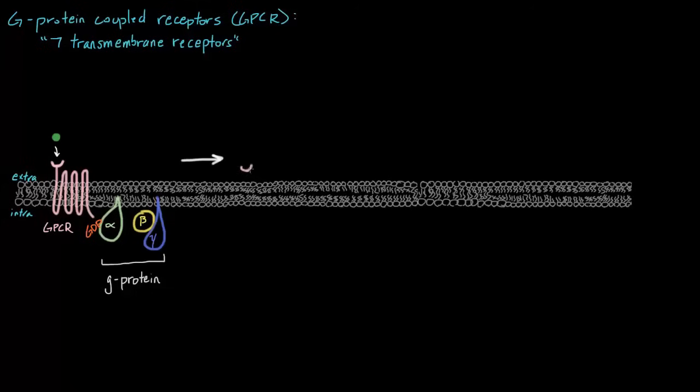So, let's just go ahead and redraw our GPCR. Again, one, two, three, four, five, six, seven, our seven alpha helices. Now, it's a little tougher to draw a conformational change, but the protein is actually going to look completely different. So, here, because of this binding, we're going to have a conformational change. The protein conformation of the GPCR will alter.